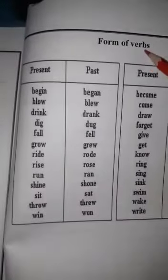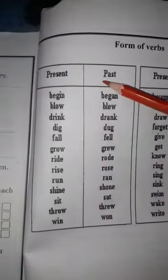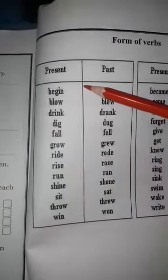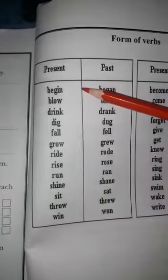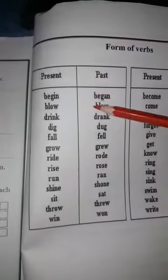At the top of the page, form of verbs. This shows verb forms, present and past. Class one, you know that when we write in present, we use verb ki first form. And in past, we use verb ki second form.